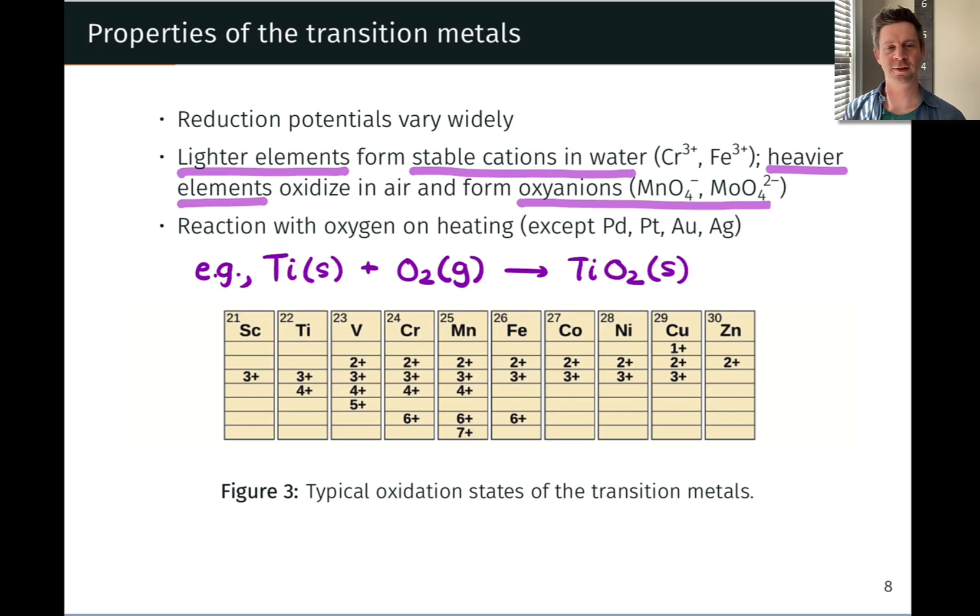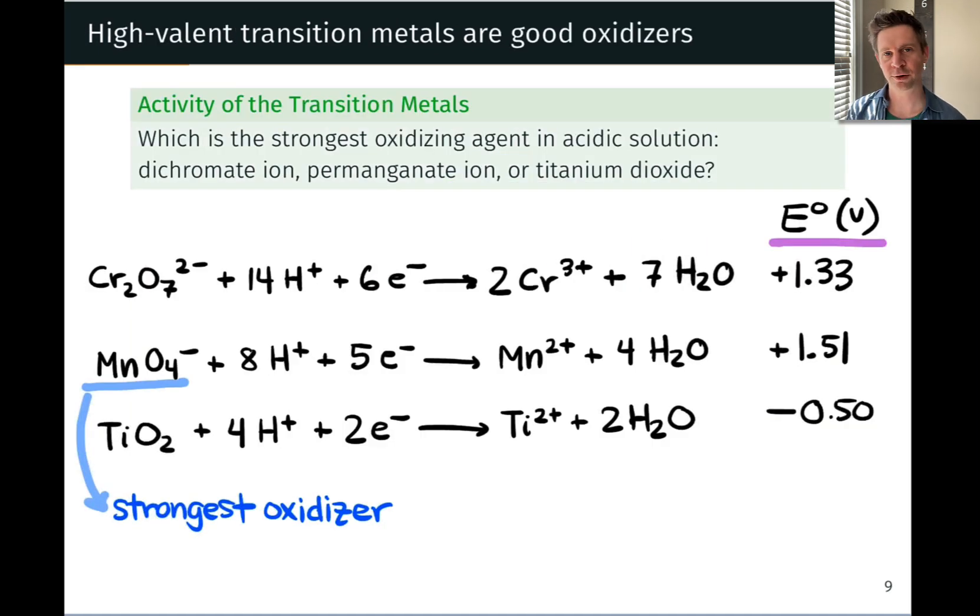This is just a general overview of the typical properties of the transition metals. I wanted to close this discussion of transition metal properties with a brief look at some reduction potentials related to transition metal containing species, just to show that these can vary over quite a wide range depending on the nature of the transition metal.